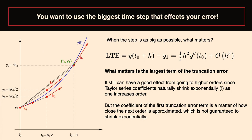When your delta t is larger, what matters more is the coefficient of the leading truncation error term — which has a sum coefficient multiplied by some derivative bound, multiplied by h to the power of the order. If h is not going to zero, the size of this coefficient actually matters. Knowing whether your Runge-Kutta method will be good or bad depends on whether these coefficients are sufficiently large or small. Order matters more as delta t gets smaller; it matters less when delta t is larger.